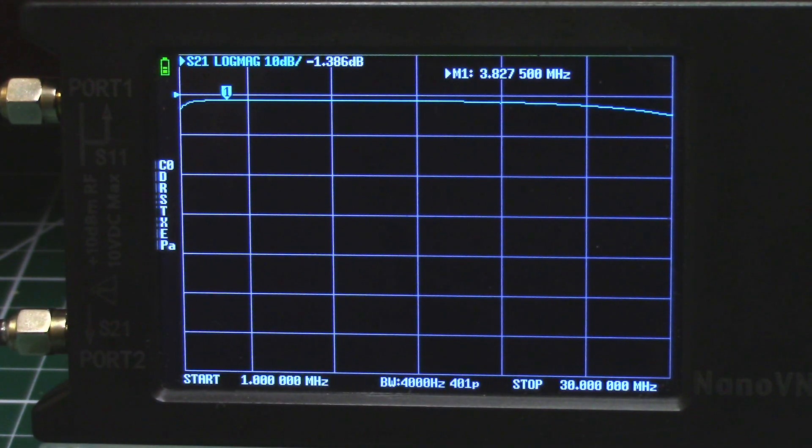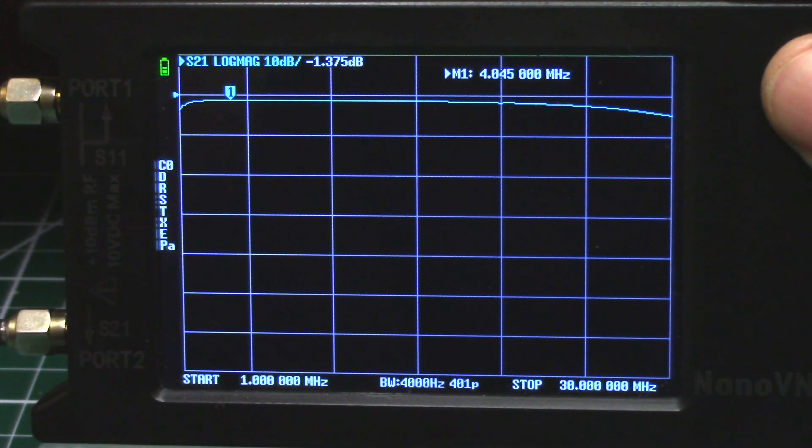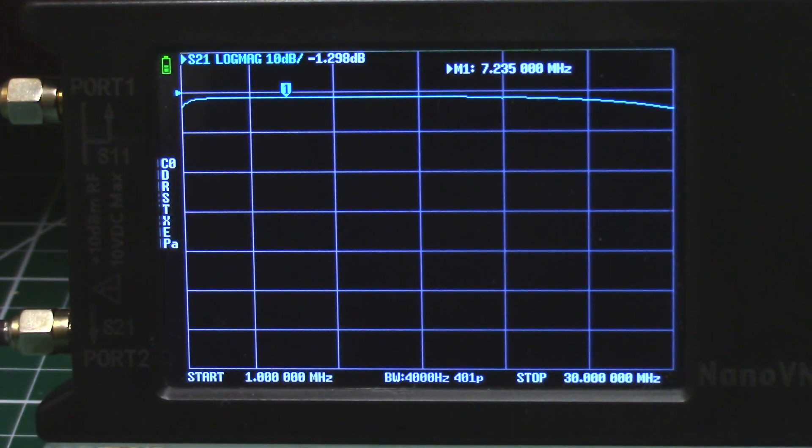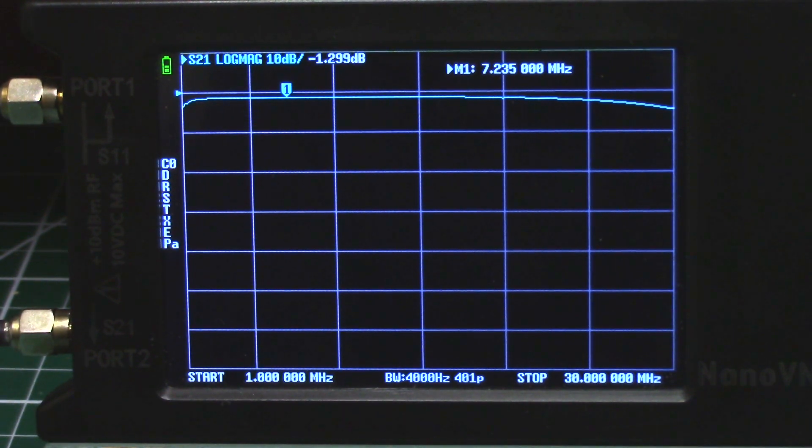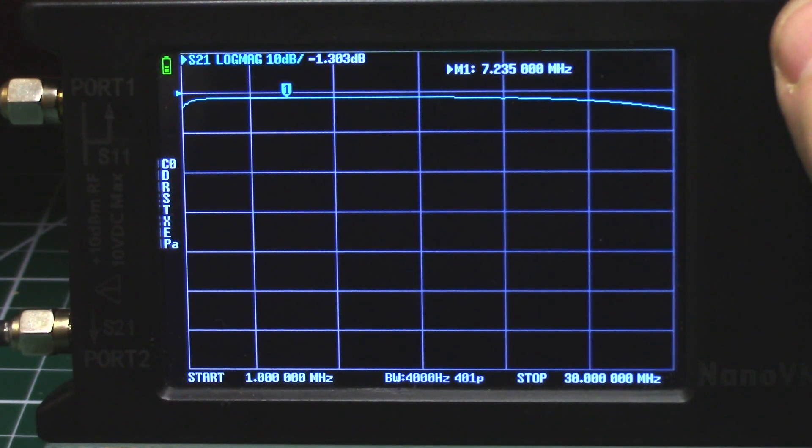We've got the nanoVNA set up now, and we're sitting on 3.827 megahertz for the 80 meter band. Our reading there, negative 1.384 dB going through both of the transformers. We'll go on up to the 40 meter band, 7.235. We're reading negative 1.298 dB. All these readings we're going to have to divide by two because this is going through both of the identical transformers.